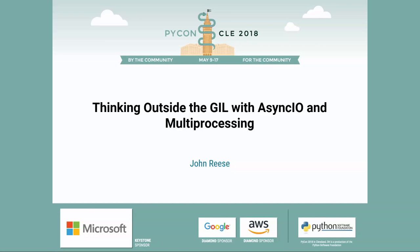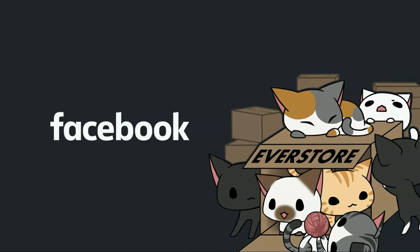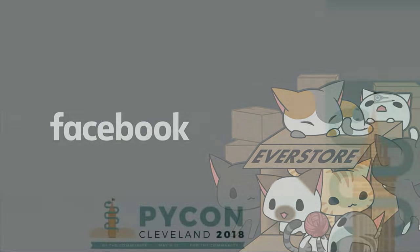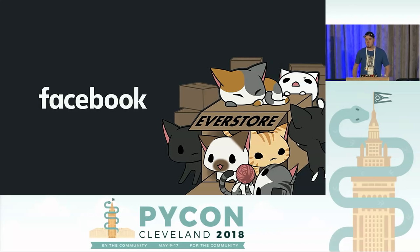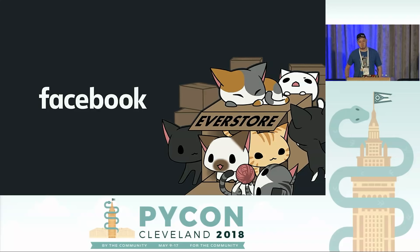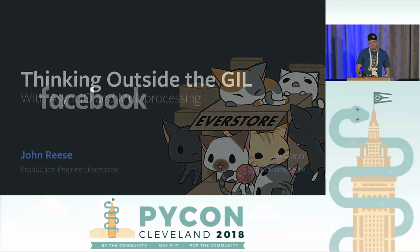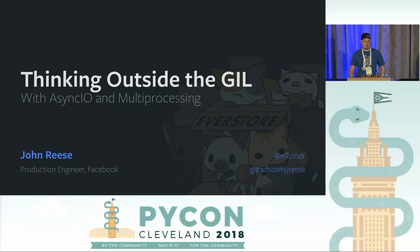All right, everybody. Thanks for coming out. We're going to hear about thinking outside the GIL here with John Reese. I'm a production engineer with Facebook. I work on EverStore, which is the exabyte scale storage service, and we host photos, videos, and more for various products, including Facebook, Instagram, WhatsApp, and Oculus. The topic is thinking outside the GIL — working on how to achieve high performance from a modern Python service.